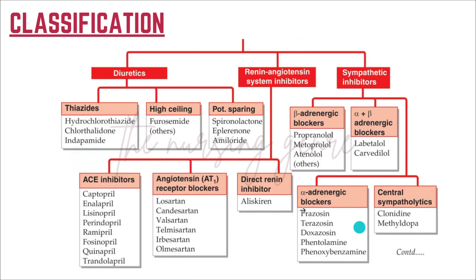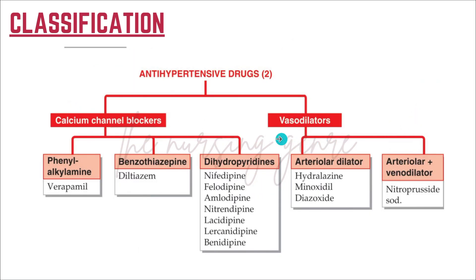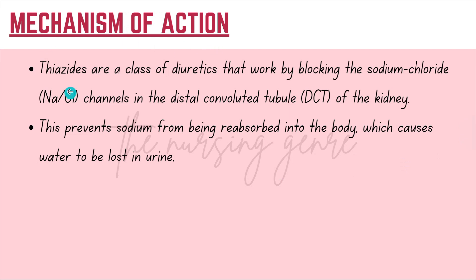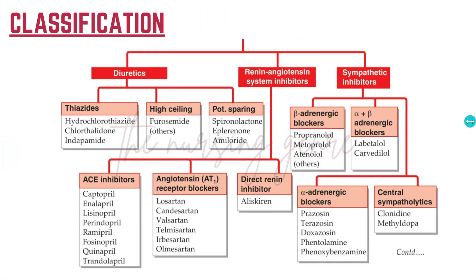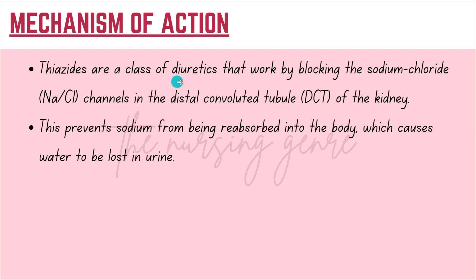In summary, the classification of anti-hypertensive drugs has five subclasses: diuretics, renin-angiotensin system inhibitors, sympathetic inhibitors, calcium channel blockers, and vasodilators. Regarding mechanism of action, thiazides are a class of diuretics that work by blocking sodium chloride channels in the distal convoluted tubule of the kidney, preventing sodium from being reabsorbed, which causes water to be lost in urine.